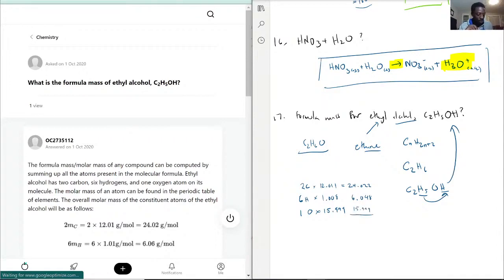And so we have 24.022, plus 6.048, plus 15.999, and we get 46.069 grams per mole. And that would be the molar, slash formula mass for ethyl alcohol. Just remember here that we're adding up the constituents together, and we have to make sure we're including how many of each we have.